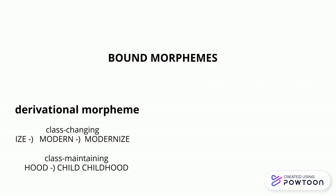Here is an example of a class-maintaining derivational morpheme: "-hood". The morpheme -hood is a derivational class-maintaining morpheme that is used to form nouns. When -hood is added to the free morpheme child, it creates the word childhood, which is another noun.